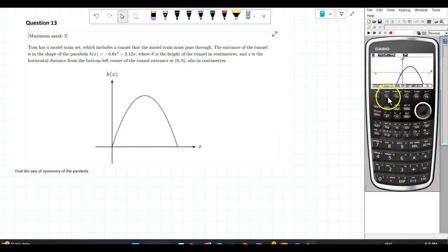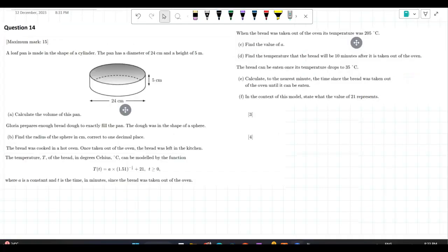You graph this, G-solve, find the max. What's your max coming to? 2.6. So your axis of symmetry is x equals 2.6. Your x is your axis of symmetry of the vertex. That's it. So whenever they ask you the axis of symmetry, you find the vertex.